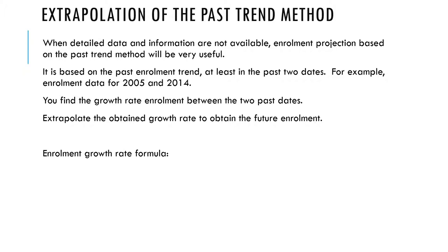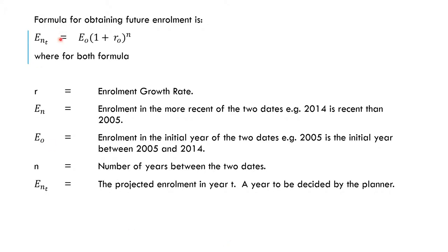Now, the enrollment growth rate formula is r equals anti-log into log(En/E0) over n minus 1. This can be translated to this formula to obtain the future enrollment. So if you are taking the growth rate, you have that formula. But for future enrollment, you have ENT equals E0 into (1 + r) raised to the power n.